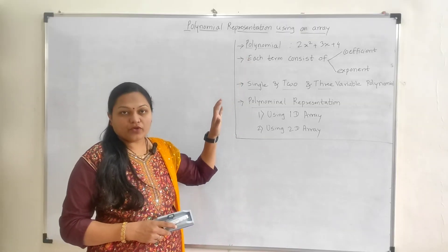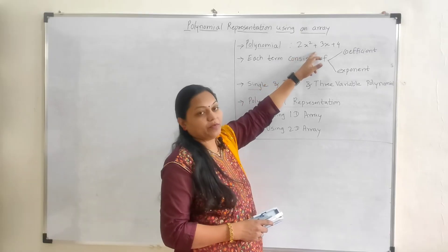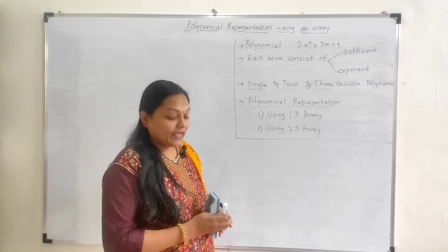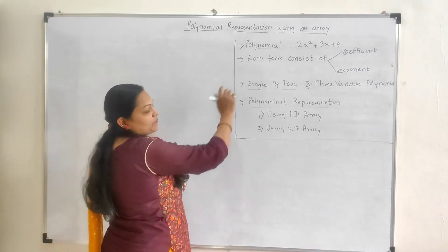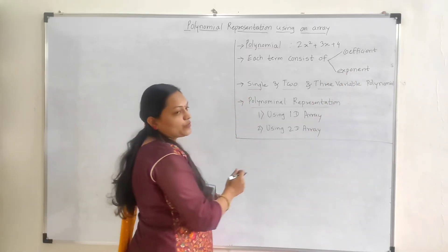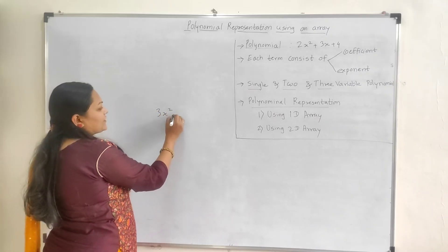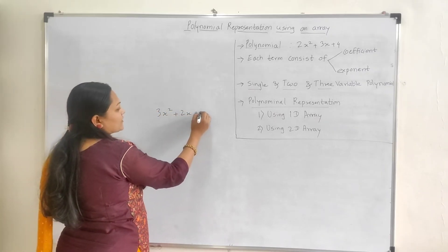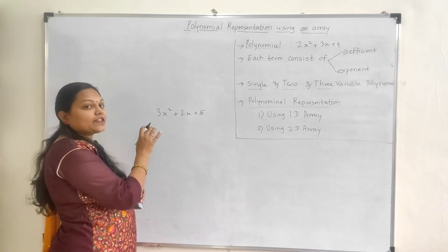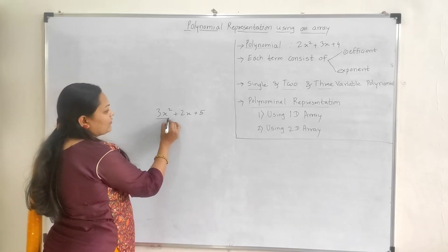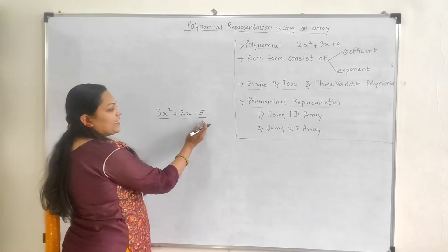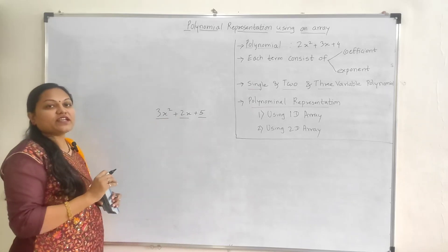So I am assuming that all of you know polynomial. This is one example of polynomial: 2x raised to 2 plus 3x plus 4. In a polynomial there are two terms — the first one is the coefficient and the second one is the exponent. Let's take another example: 3x raised to 2 plus 2x plus 5. How many terms are there? Three terms are there in this polynomial, and each and every term has a coefficient and exponent.